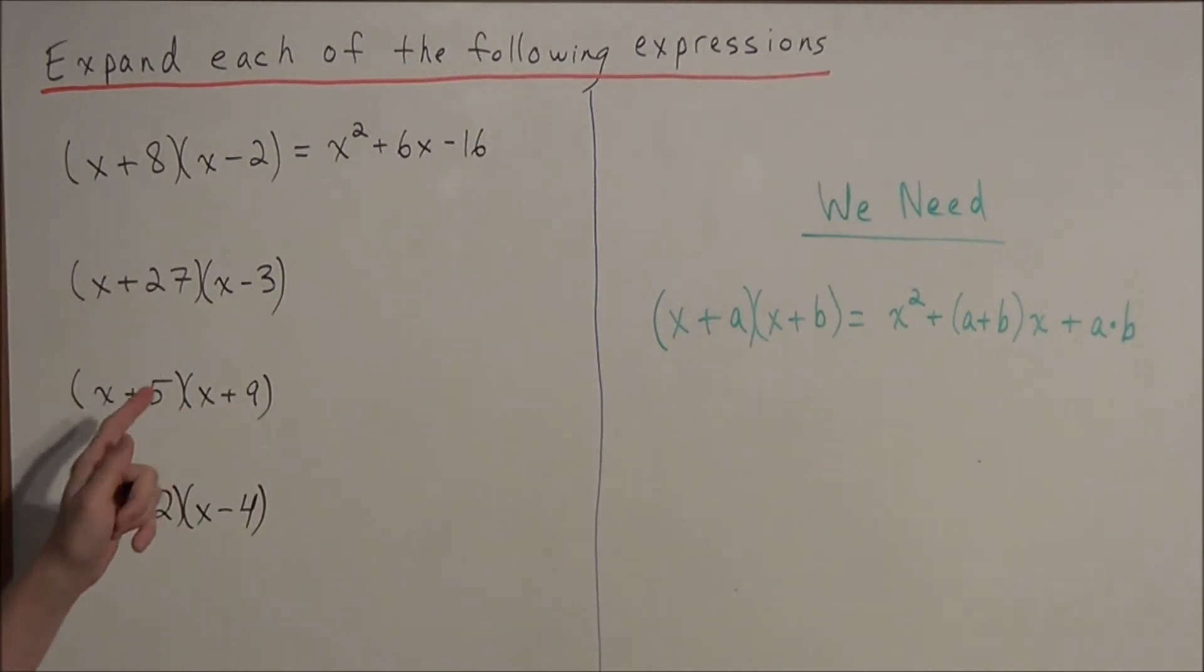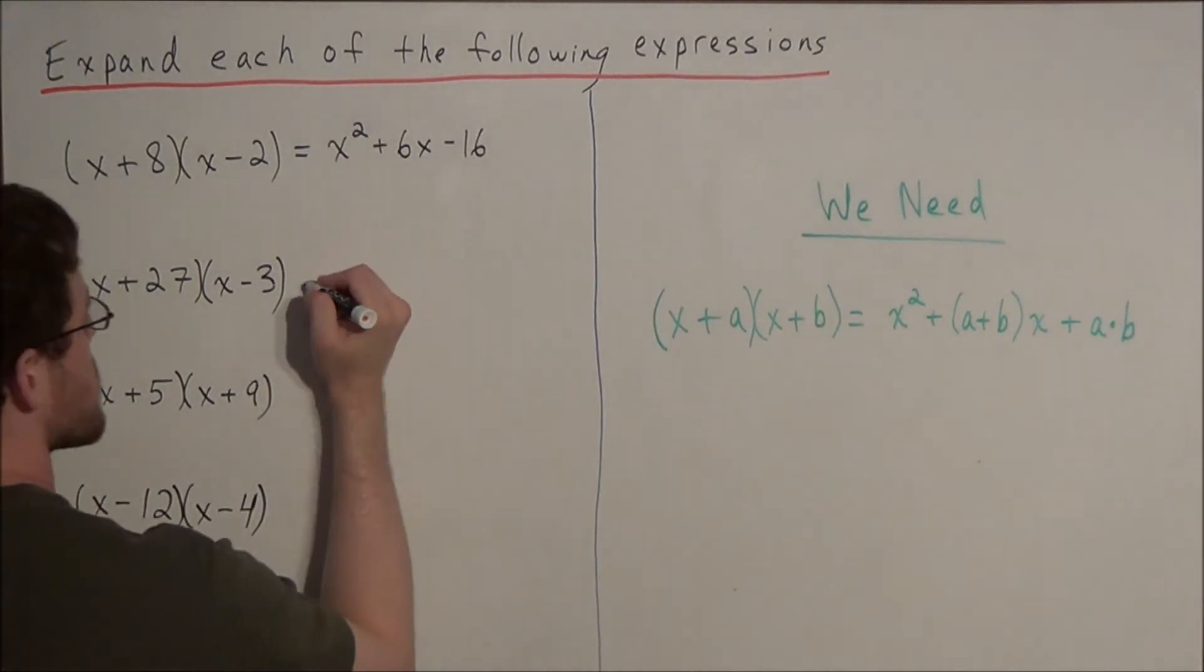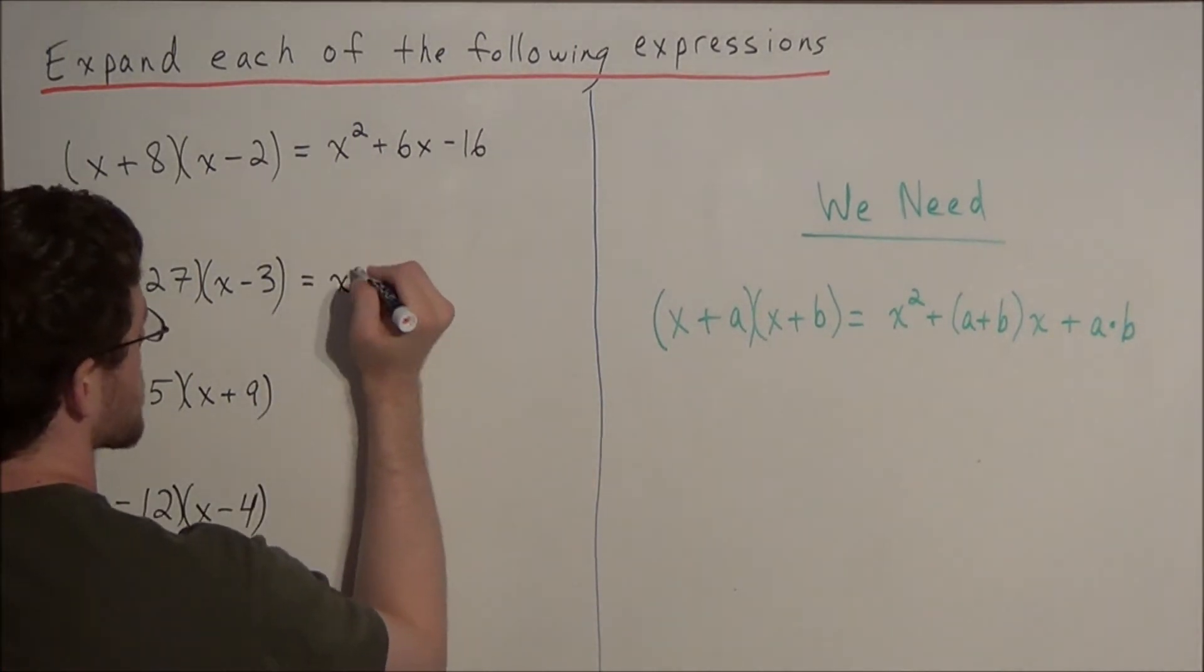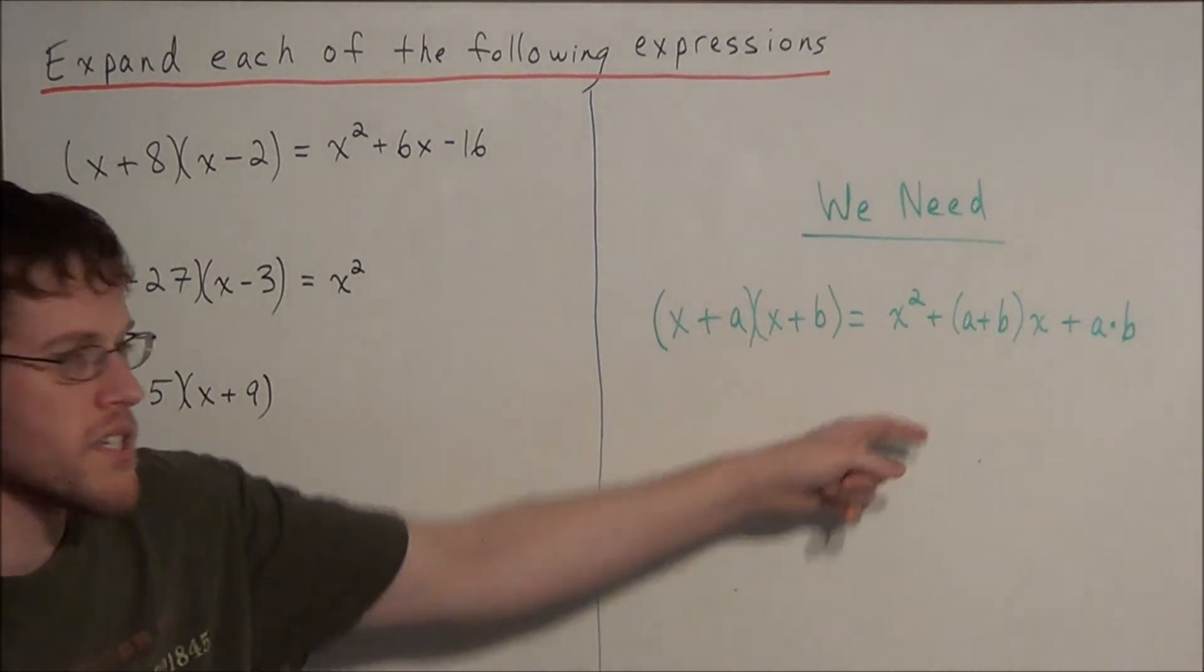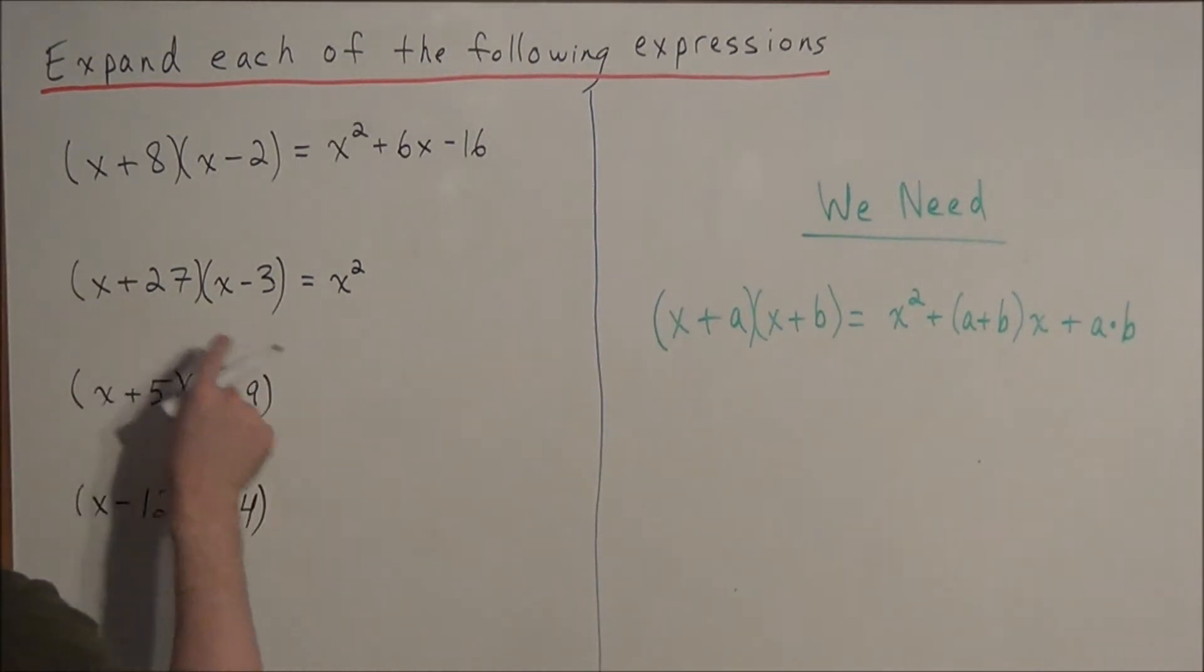So now we can move on to the next problem. We have our first term is of course going to be an x squared, because we have x times x, but now if we want to find our middle term, once again we can say what is the a plus b in this example.